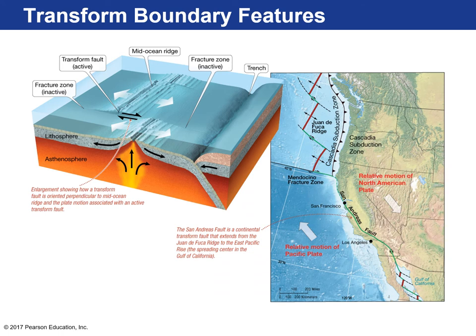Most transform faults are found in the ocean, helping accommodate spreading center movement. There are also continental transform faults — one cuts from the Caribbean plate through Haiti and into Guatemala. Here are transform faults connecting two different spreading centers: spreading center, transform fault, spreading center, transform fault. Here's the San Andreas Fault cutting through California and into the Gulf of California. And this is a subduction zone with an ocean trench — a V-shaped trench — showing the deepest parts of our ocean where an ocean plate is buckling downwards.